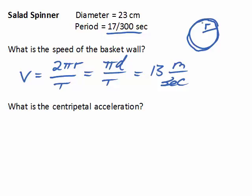The next part we're going to do is calculate the centripetal acceleration. A sub c is equal to v squared over r.